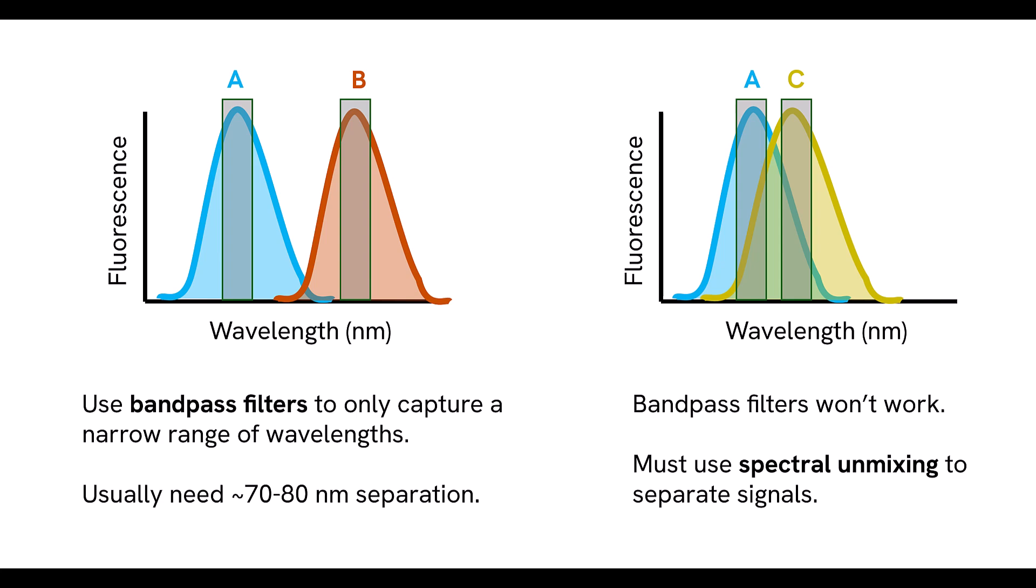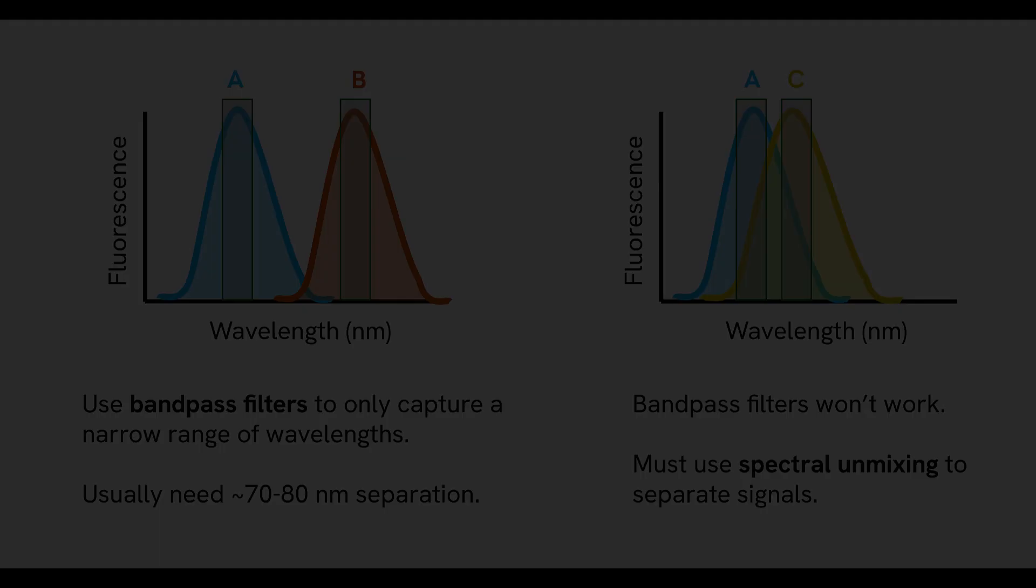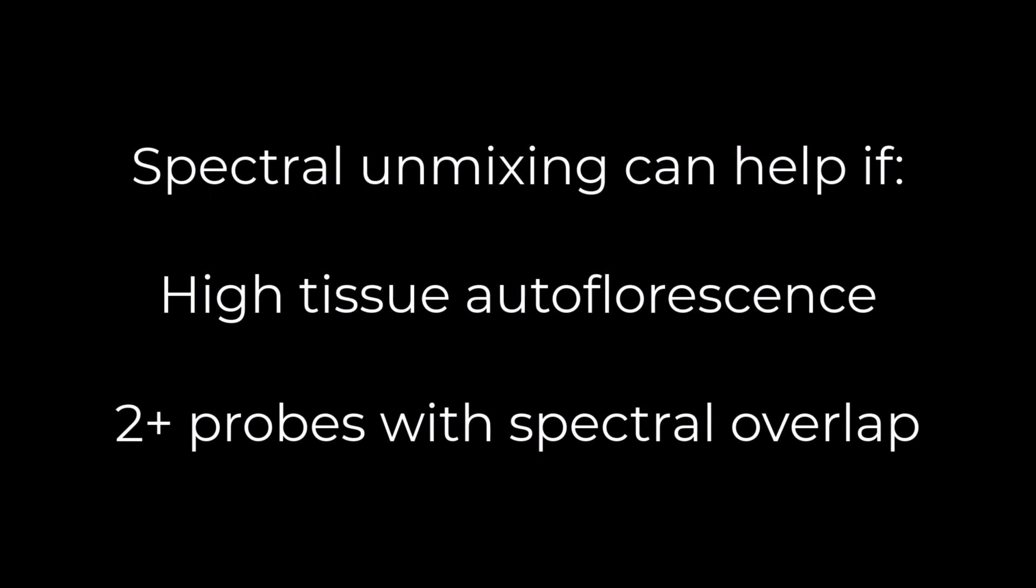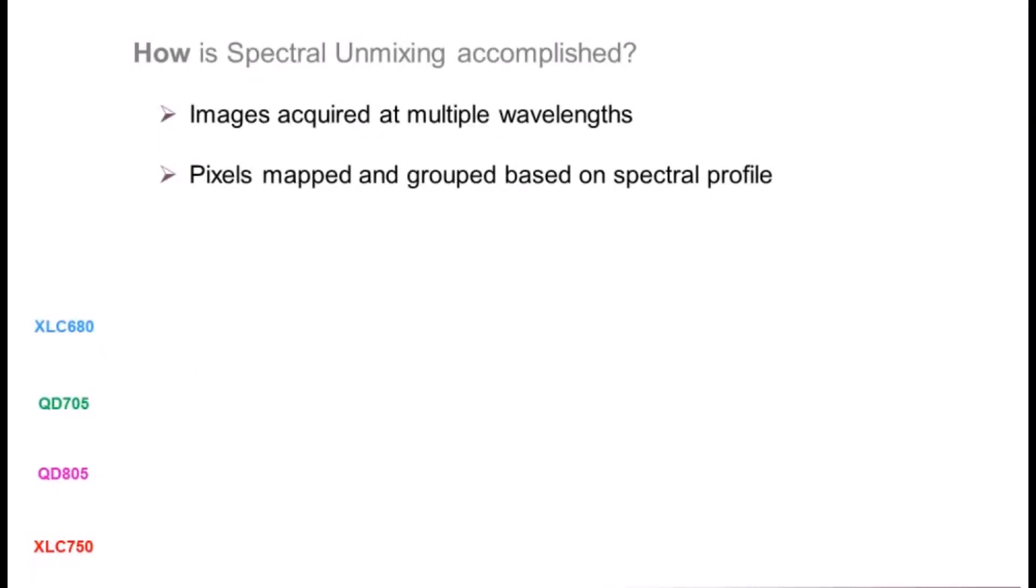The two most common scenarios where spectral unmixing is helpful are when tissue background is high, or when using two probes that have significant spectral overlap, usually less than 70 nanometers in separation. Spectral unmixing separates multiple spectra that might be mixed in vivo, in vitro, or ex vivo in a pixel by pixel manner.